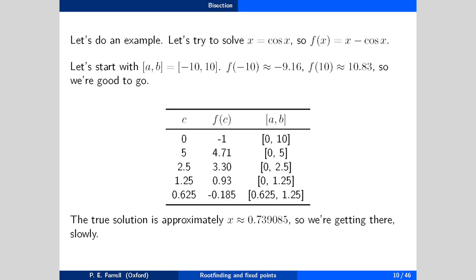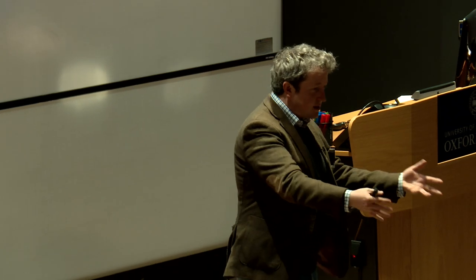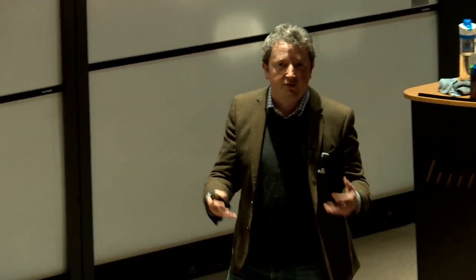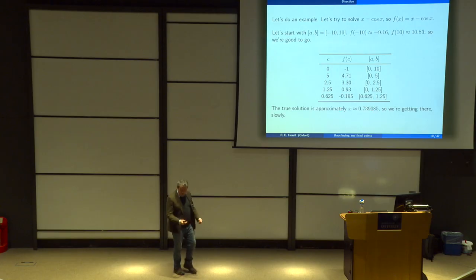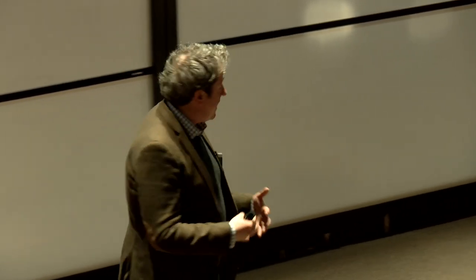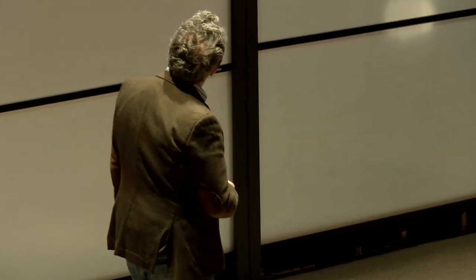The true solution is approximately 0.739085. So we are getting there, but slowly. If you're the court mathematician to the Babylonian emperor, you probably have workers to do your calculations. And even if you have to do it yourself, it's enough calculations to keep you busy between coffee and lunch — not fatal, but not super fast either. We're going to meet other algorithms that construct sequences of approximations much, much faster than this, but with weaker guarantees of termination.